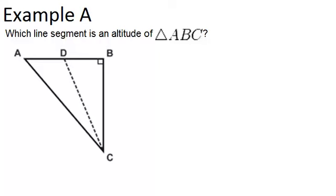In example A, it says, which line segment is an altitude of triangle ABC?